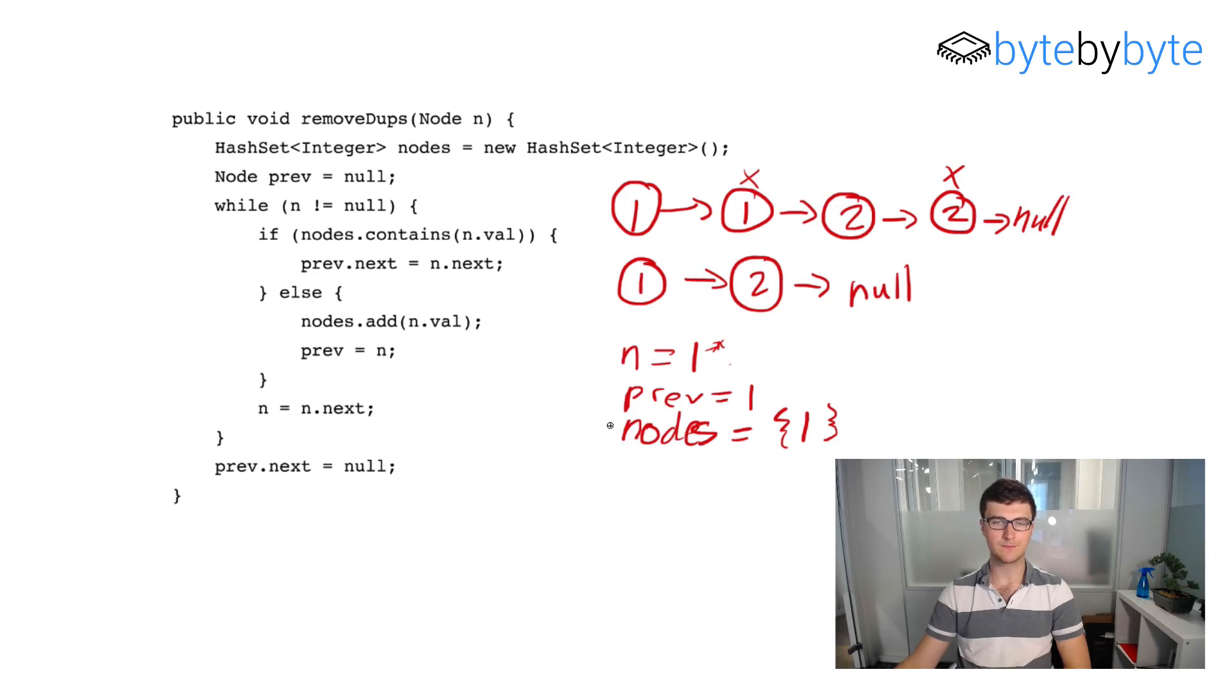So we come back to the top of our loop. n is not equal to null but nodes does contain n.value. So we get prev.next equals n.next. And so prev is this node here and prev.next is this pointer and n.next is the two. So prev.next now points to n.next like this. And so we're going to say we set prev.next equals n.next and now n equals n.next. So now n is going to be equal to two as well.